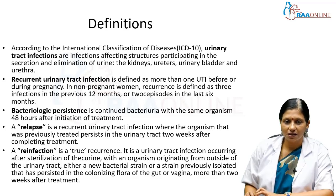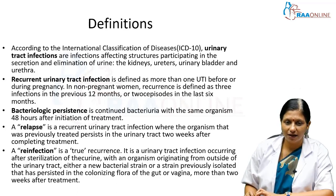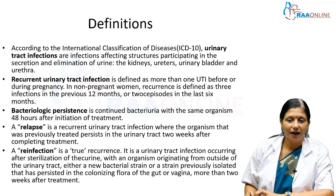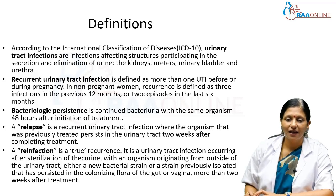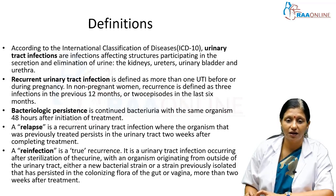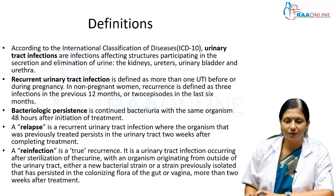Bacteriological persistence is continued bacteriuria with the same species even 48 hours after the initiation of treatment. A relapse occurs when the organism previously treated is identified again two weeks after treatment. Reinfection is a true recurrence — a UTI occurring after sterilization of the urine with an organism originating from outside the urinary tract, either a new bacterial strain or a previously isolated strain persisting in colonizing flora more than two weeks after treatment.